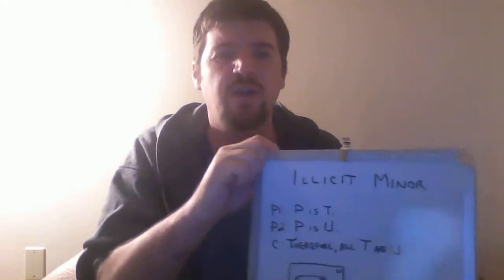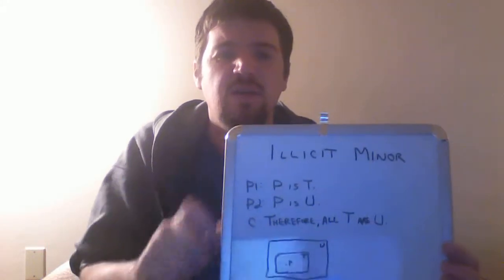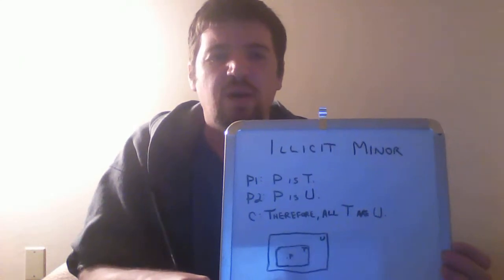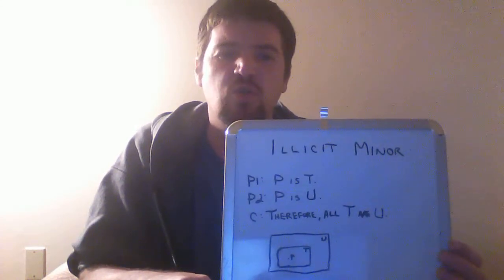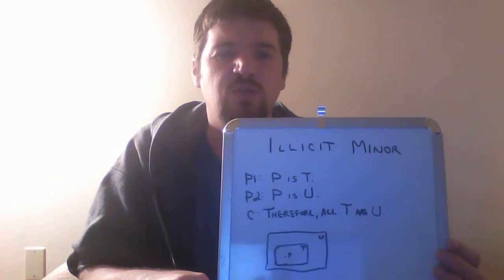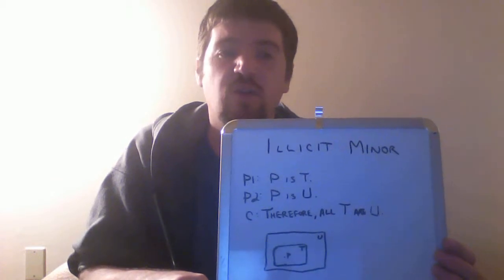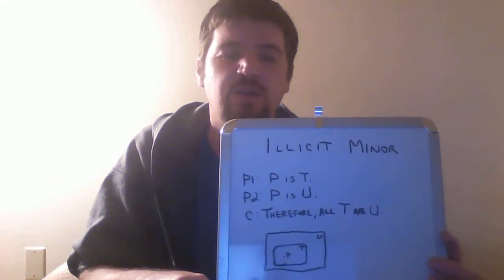The other one I'm going to discuss is called Illicit Minor — no big surprise. Premise 1: all P are T. Premise 2: all P are U. Conclusion: therefore, all T are U.